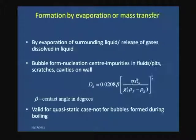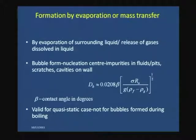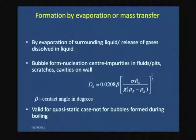Another way is by mass transfer or evaporation of the surrounding liquid — for example, in beer or soda, dissolved gas is released upon pressure reduction and rises as bubbles, or evaporation of the surrounding liquid generates bubbles. In this case the expression is in terms of equivalent diameter — just large enough to break away from a horizontal surface — where the contact angle beta (in degrees) is included because the surface is important here.